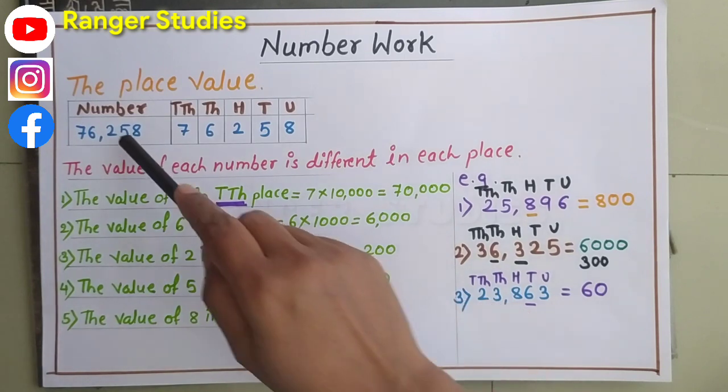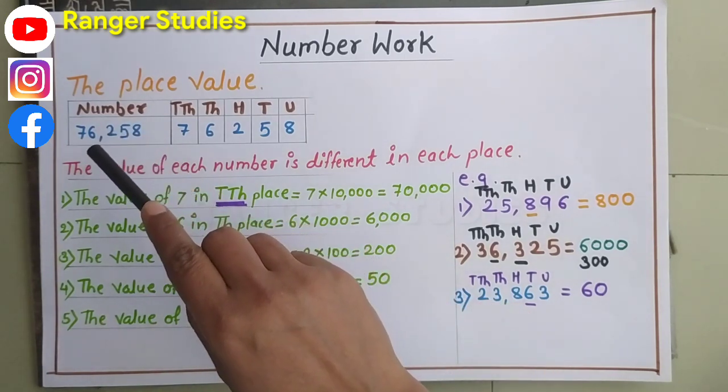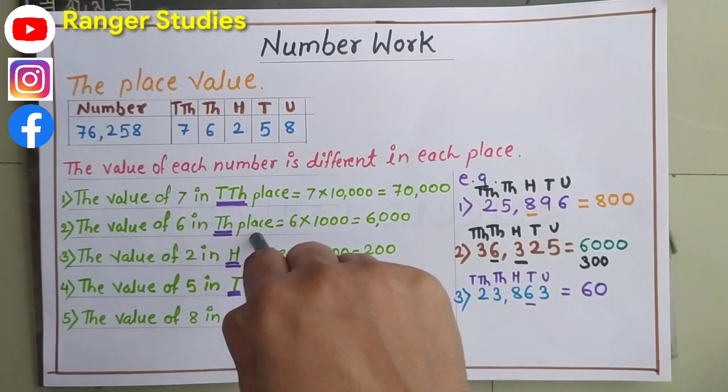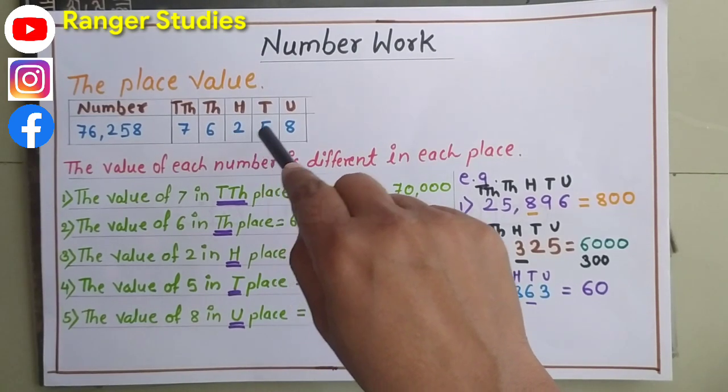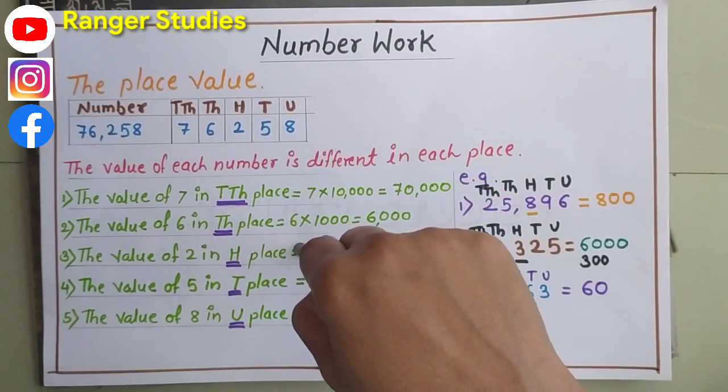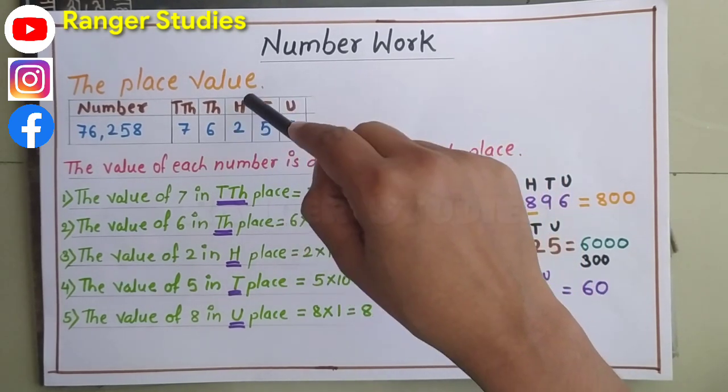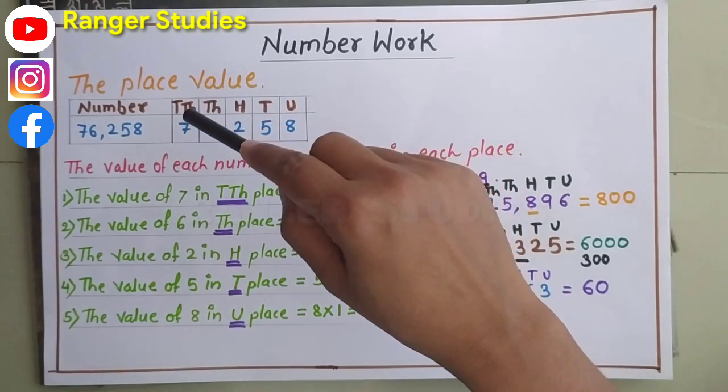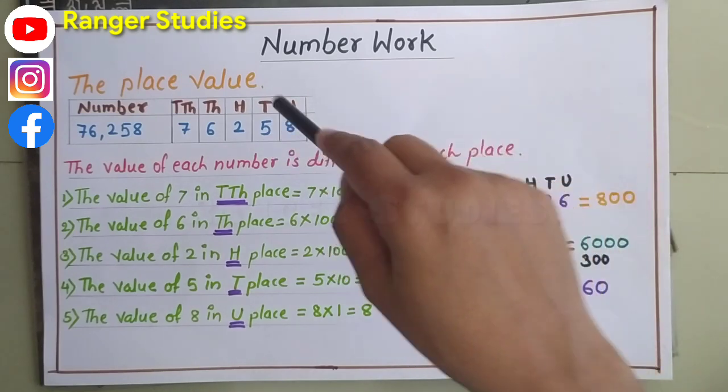Let's see the example. Here is one number, 76,258. Observe the place of each digit number. 8 is at unit place, 5 is at ten place, 2 is at hundred place, 6 is at thousand place, 7 is at ten thousand place.